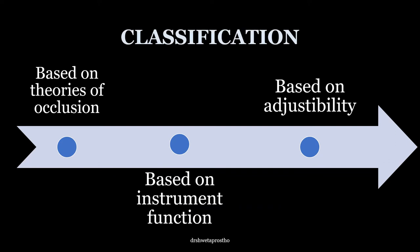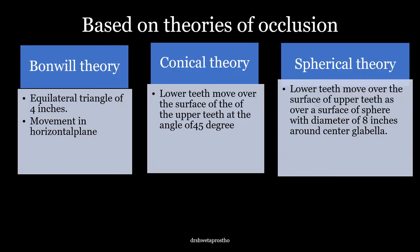Classification of articulators. Articulators can be classified based on the theories of occlusion by different proposers, based on instrument function — the most important and accepted classification — and third, based on adjustability. You will need to write down these classifications to answer long notes or short notes, and many MCQs are also framed from this topic. First, based on theories of occlusion: three theories — Bonneville's theory, conical theory, and the spherical theory. Bonneville's theory was given by W.G.A. Bonneville.